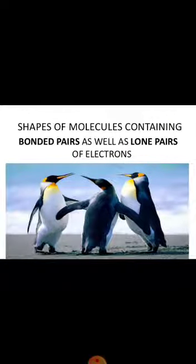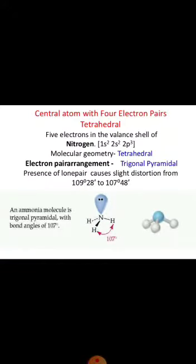The shape of molecules containing bonded pairs as well as lone pairs of electrons: these molecules have both bonded pairs and lone pairs. The first example is ammonia, NH3. Nitrogen is in the 5th group, so it has five electrons. It forms three bonds with three hydrogen atoms — three bond pairs — and has one lone pair remaining. As a result, the lone pair occupies more space at the top, and the bond pairs are directed downward. The geometry is trigonal pyramidal and the bond angle is approximately 107 degrees — reduced from the ideal 109.5 degrees due to lone pair repulsion.